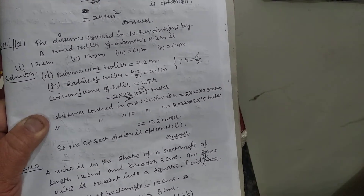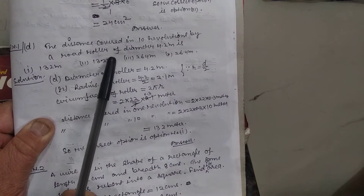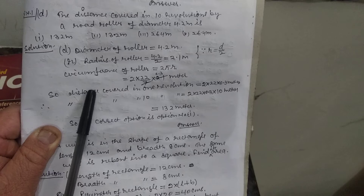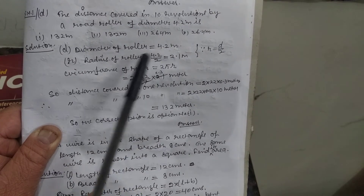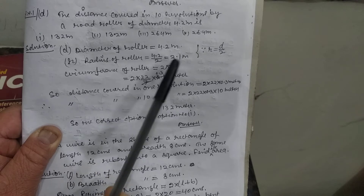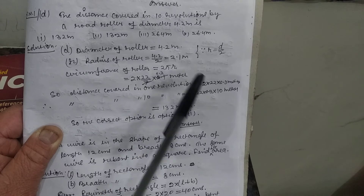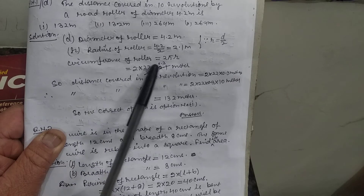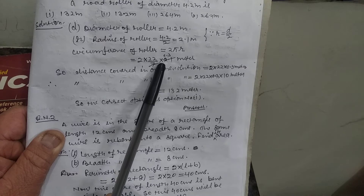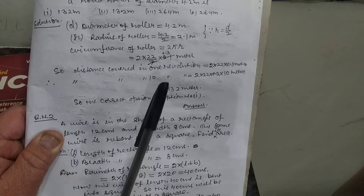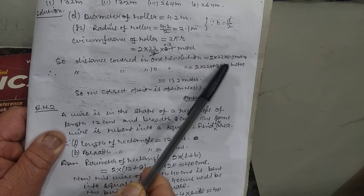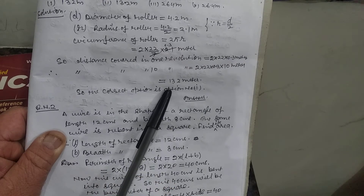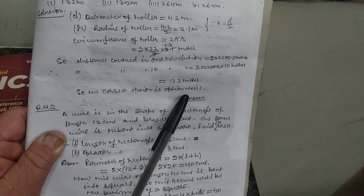Question 1D: Find the distance covered in 10 revolutions by a road roller of diameter 4.2 meters. Diameter is 4.2 m, so radius equals 4.2 ÷ 2 equals 2.1 m. Circumference of the roller equals 2πr equals 2 × (22/7) × 2.1, which is the distance covered in 1 revolution. Distance covered in 10 revolutions equals circumference × 10 equals 132 meters. The correct option is option number 1.